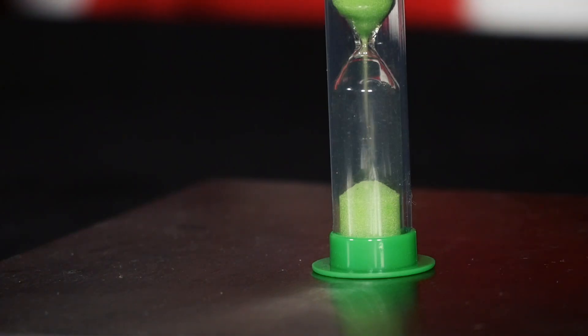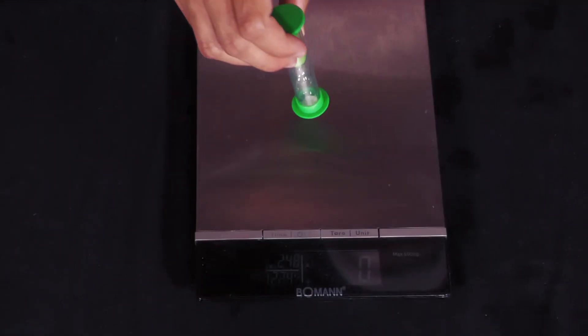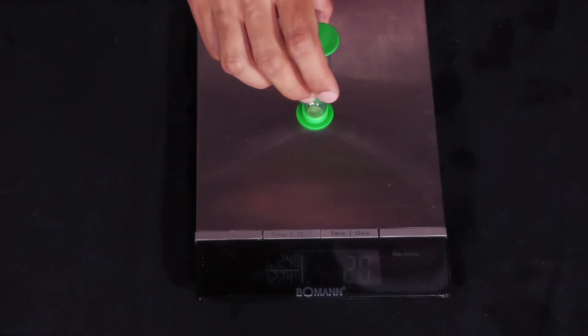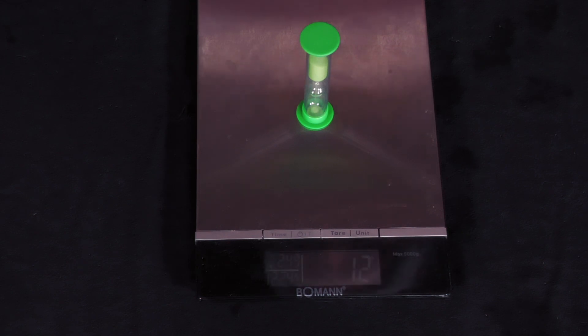Only at the start or end of the sand flow in the hourglass does only one of the two effects occur, so the display of the scale then fluctuates a little for a short moment.